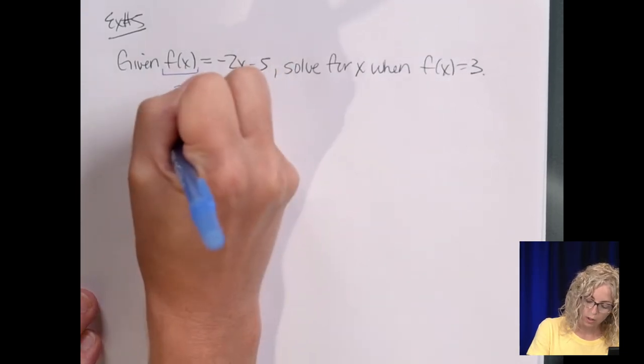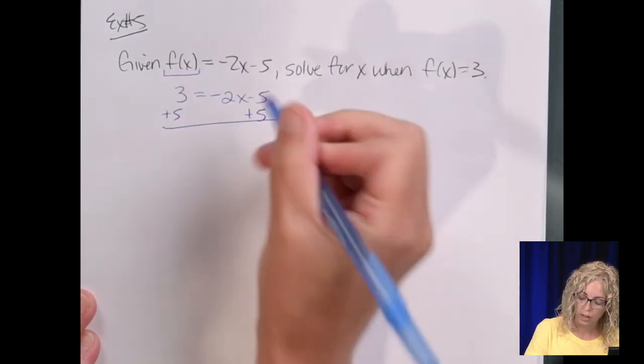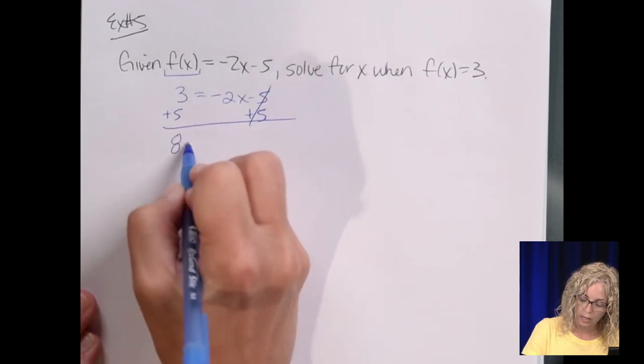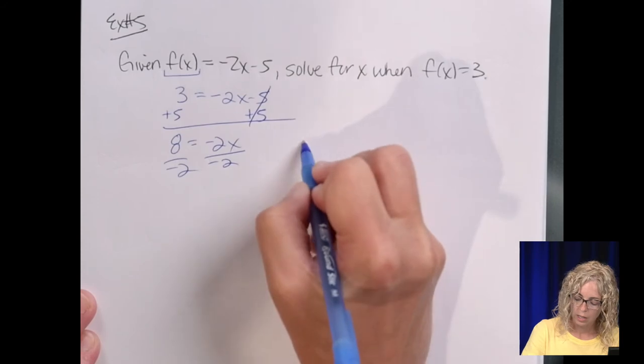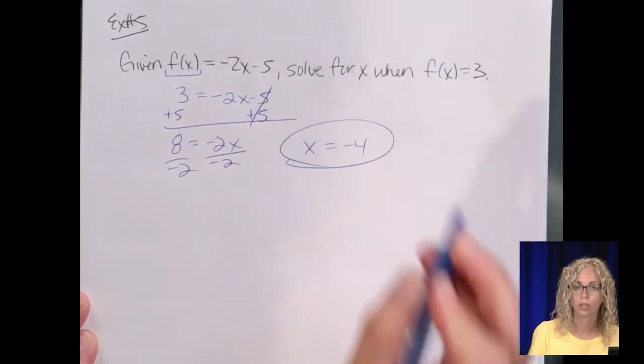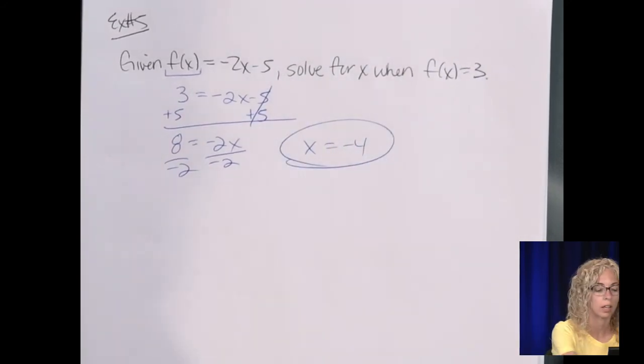So we add, or I'm sorry, to solve for x. Add the 5 over, so 8 equals negative 2x, divide by negative 2, and x equals negative 4. Okay, not so bad. And you might like the function stuff. I do.